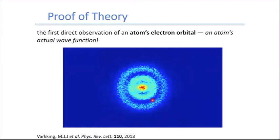Looking at the image, it resembles the Bohr model with its rings because you're essentially looking at a sphere sliced in half — and that's why the Bohr model works so well for hydrogen. It just doesn't work for other atoms.